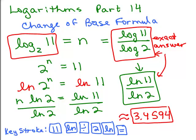Now if you have a scientific calculator, usually these keystrokes at the bottom will work, whether you use natural log or log. You just put in the numerator 11 and then natural log or log divided by 2 and then natural log or log and then the equal sign and you should get 3.4594 if you rounded it to the nearest 4 decimal points.